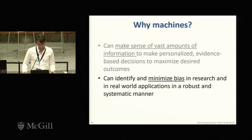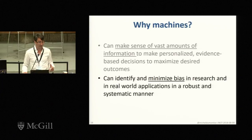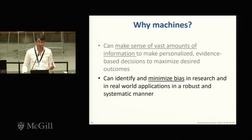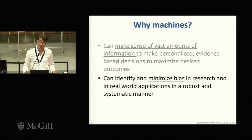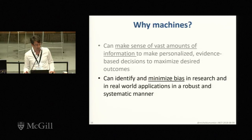That makes a lot of sense. The other part is the issue of bias — people themselves are biased, and machines are learning from people. The question is, can we build predictive machines that are unbiased or relatively less biased than people? I think that certainly can be the case.